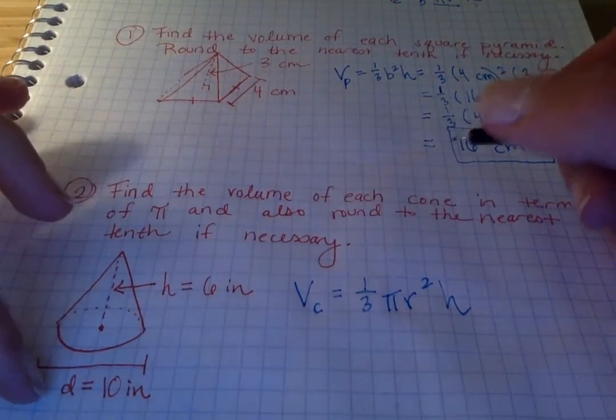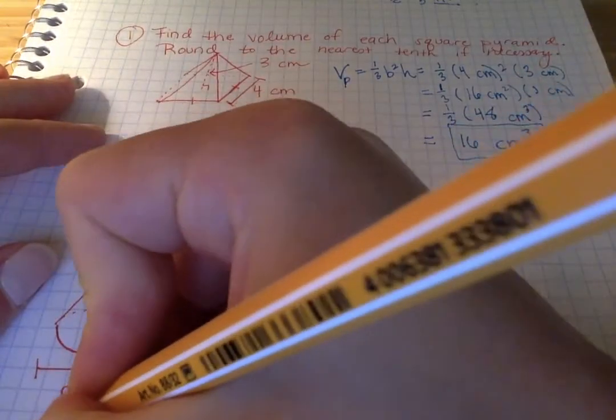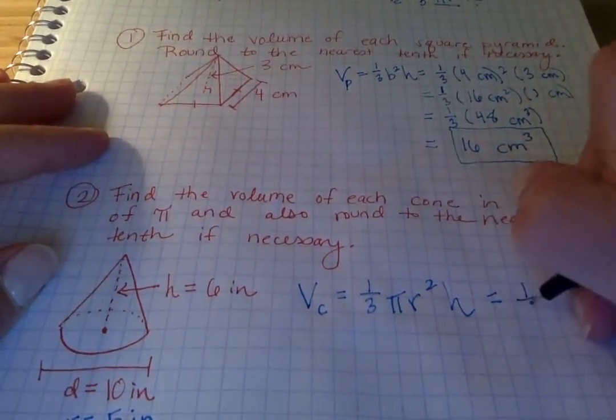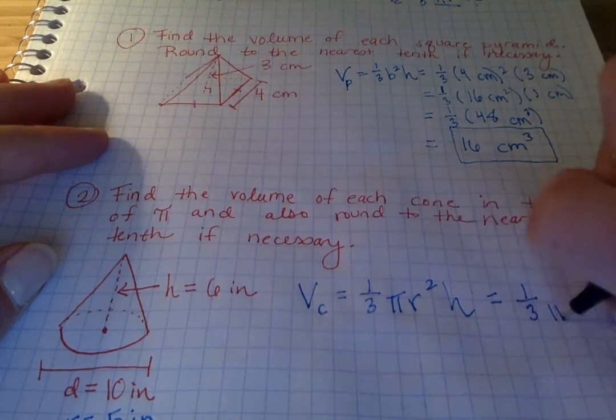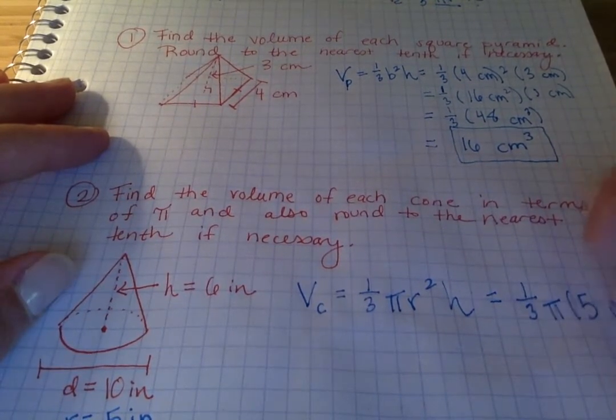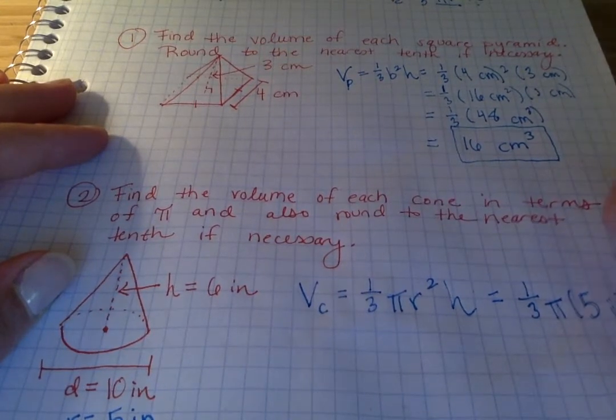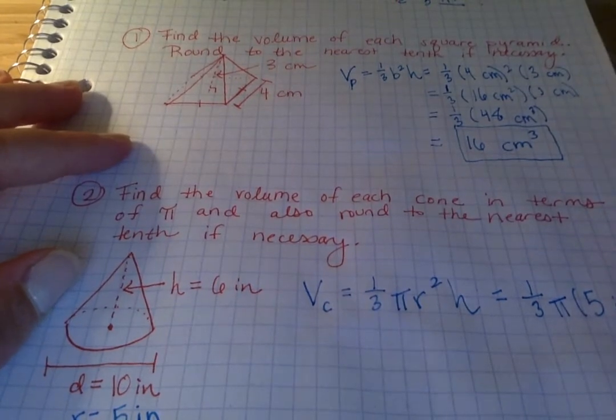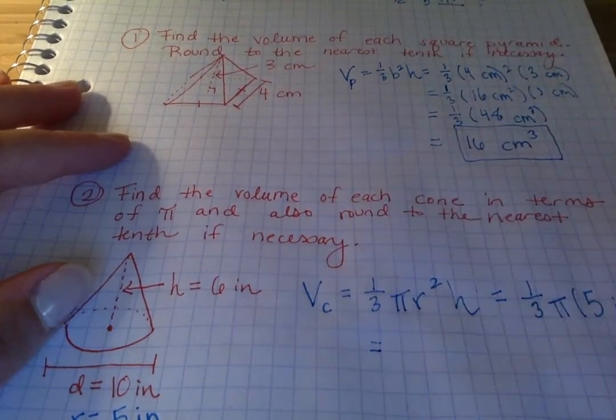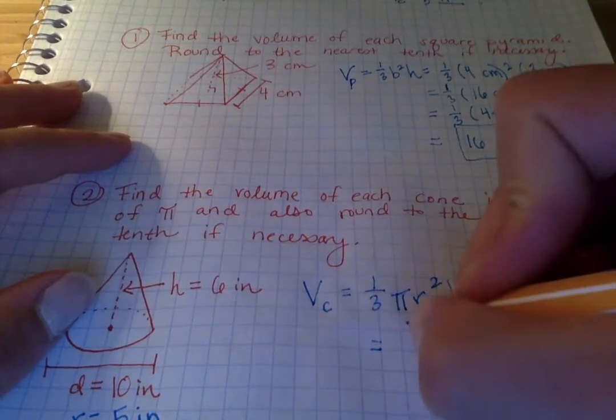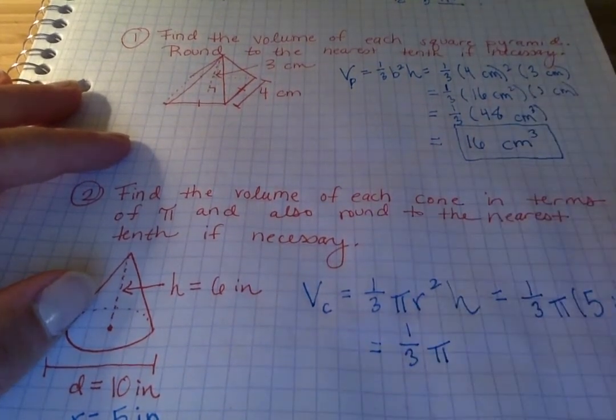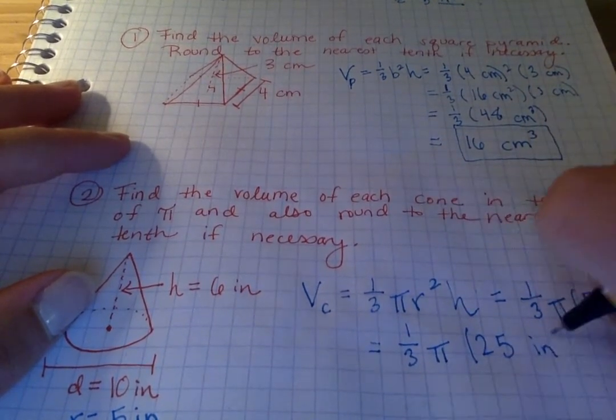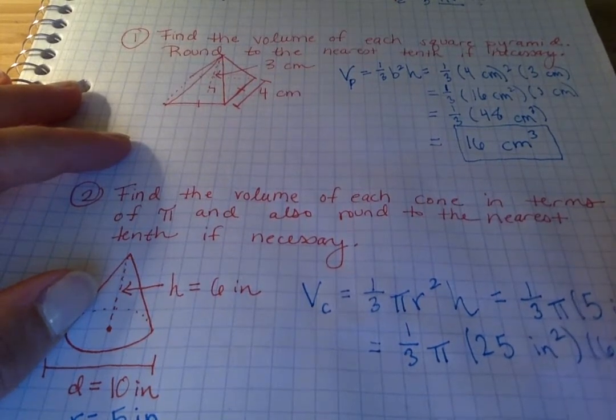Here they give us a diameter. Diameter is ten, so I just need to take that one step further. The radius is five. And then it's one-third pi five inches squared times my height, which is six inches. Now I have one-third pi. I need to square five and square inches. I get twenty-five inches squared times six inches.